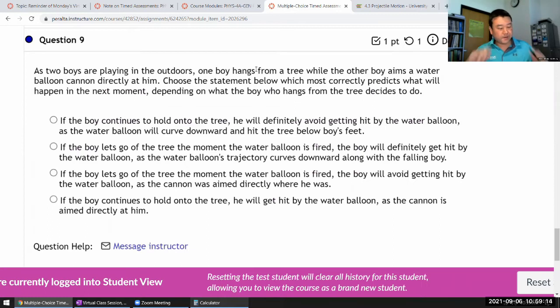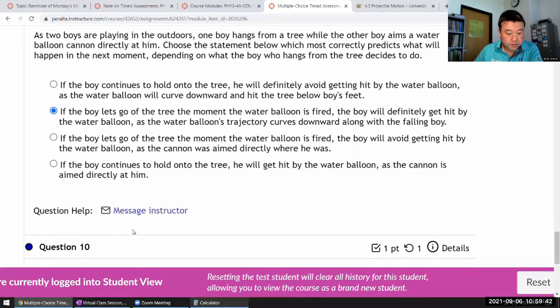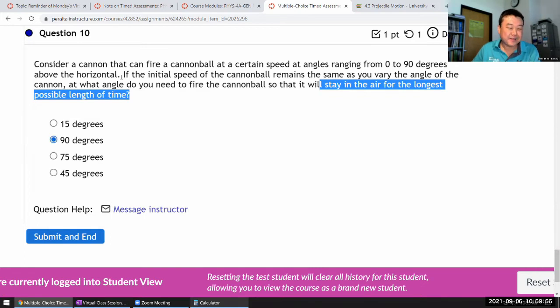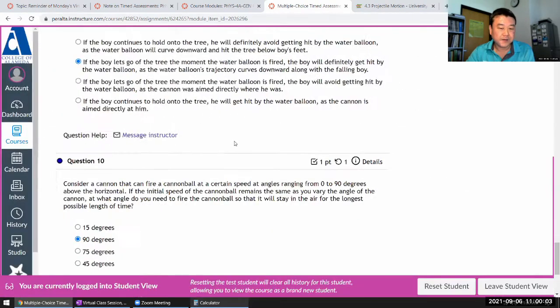Oh yeah. This is the shoot the monkey demo question. So read it through that. Hold on to three. He might not get hit because if the water balloon travels fast enough. So I'd like to go to the tree. Yeah. So this is the scenario for the shoot the monkey demo because they fall the same amount. So regardless of the speed of the water balloon, he gets hit. Yeah. The rest is wrong. Okay. Question 10. Who is there a cannon that can fire a cannon ball at us? What angle do you fire? Stay in the air for the longest possible length of time. 90 degrees. I think there's a different version of this question that's looking for maximum range. That would be 45 degrees. Read the question carefully. Okay.